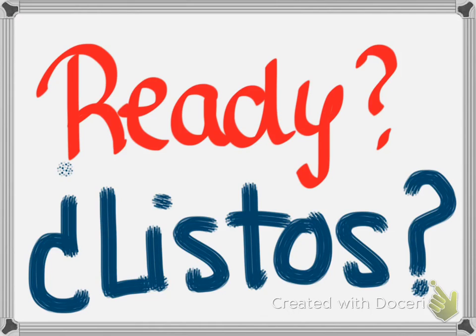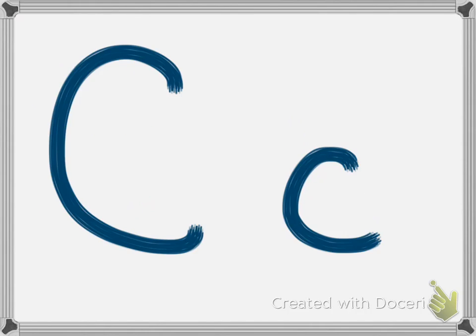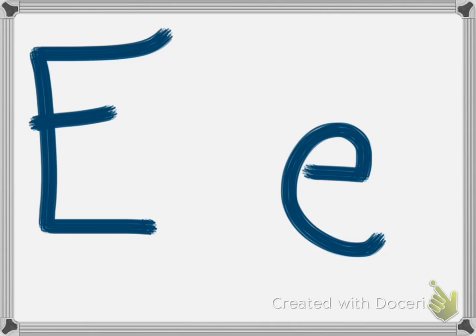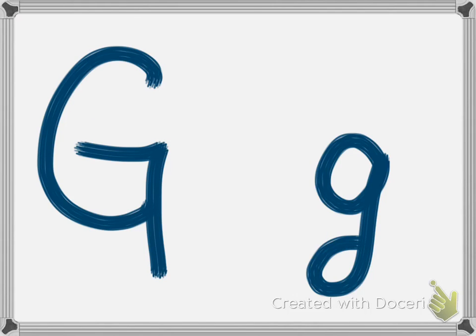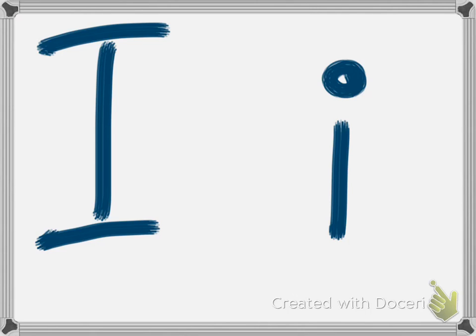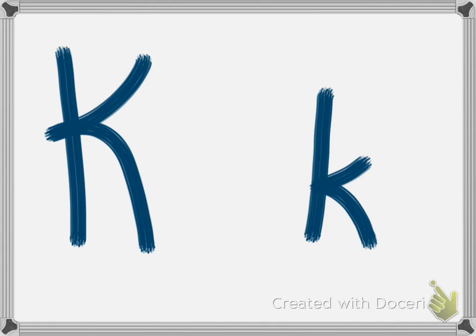Let's practice the alphabet. I will say each letter two times and you pronounce the letter after I say it. Let's start: A, A, B, B, C, C, D, D, E, E. Notice that in Spanish this is 'A' — and continuing: F, G, H, I, J, J (jota, jota), K, K.